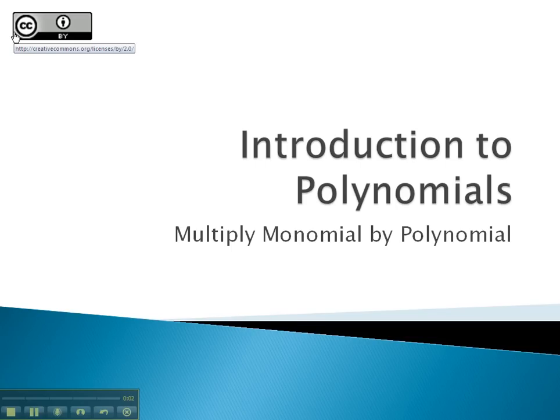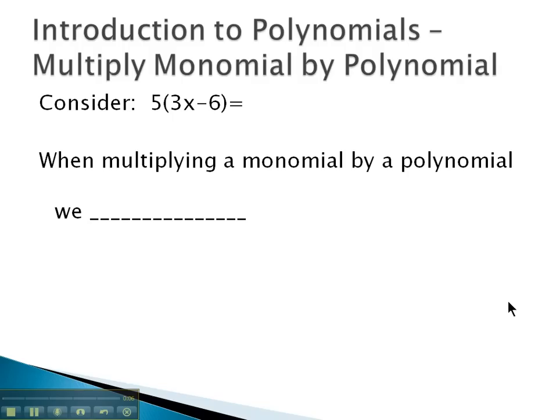In this video, we're going to look at how we can multiply a monomial times a polynomial. I want to consider a multiplication problem we've seen before: 5 times parentheses 3x minus 6. We know in this case we distribute the 5 onto the 3x to get 15x, and then distribute the 5 onto the negative 6 to get negative 30.